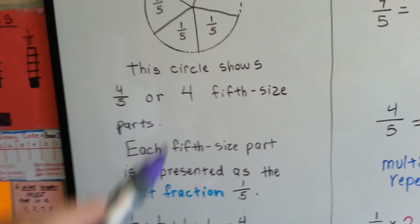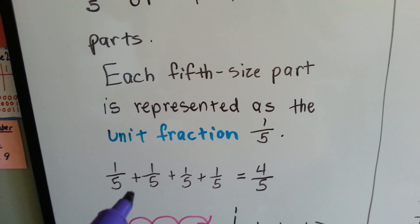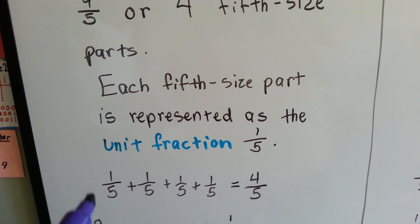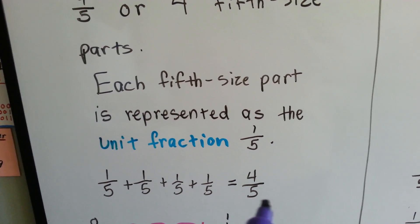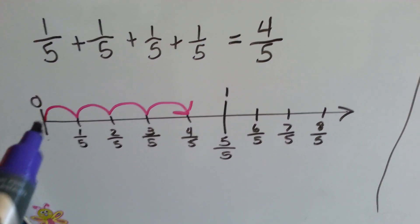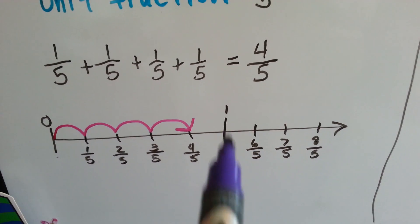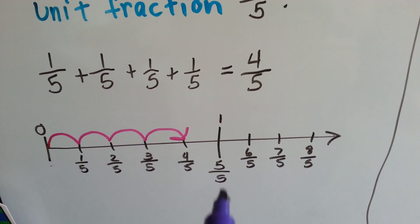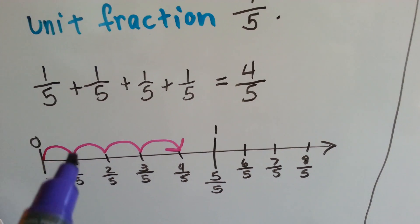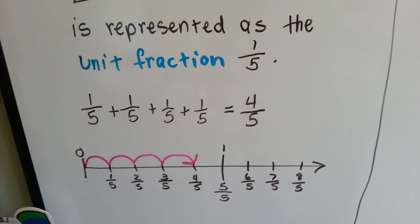Each one of these 4 is represented by 1 fifth. What we can say is that 1 fifth plus 1 fifth plus 1 fifth plus 1 fifth is equal to 4 fifths. We add the numerator and slide the denominator across. On a number line, it would look like this. If this was broken into fifths and 5 fifths is 1, which we've learned before. When the numerator and the denominator are the same, it equals 1 whole. We could jump from 0 and go 1 fifth, 2 fifth, 3 fifth, 4 fifth. And that's how we would count.